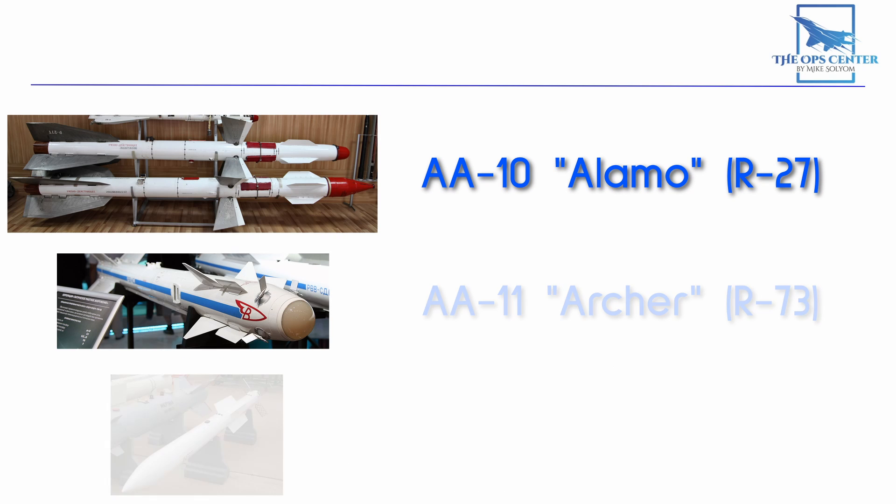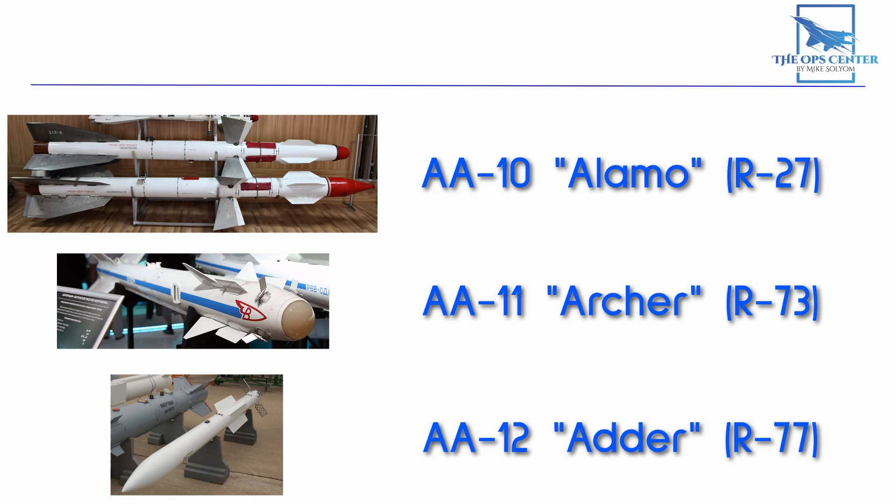Here are the three air-to-air missiles most commonly used on Soviet and Russian 4th generation fighters. The name in parentheses is what the Russian military calls these missiles. However, I'll be using the names given by NATO, which are on the left. These are known as reporting names, and it's just a way to get everyone in the various NATO countries to use the same terminology.